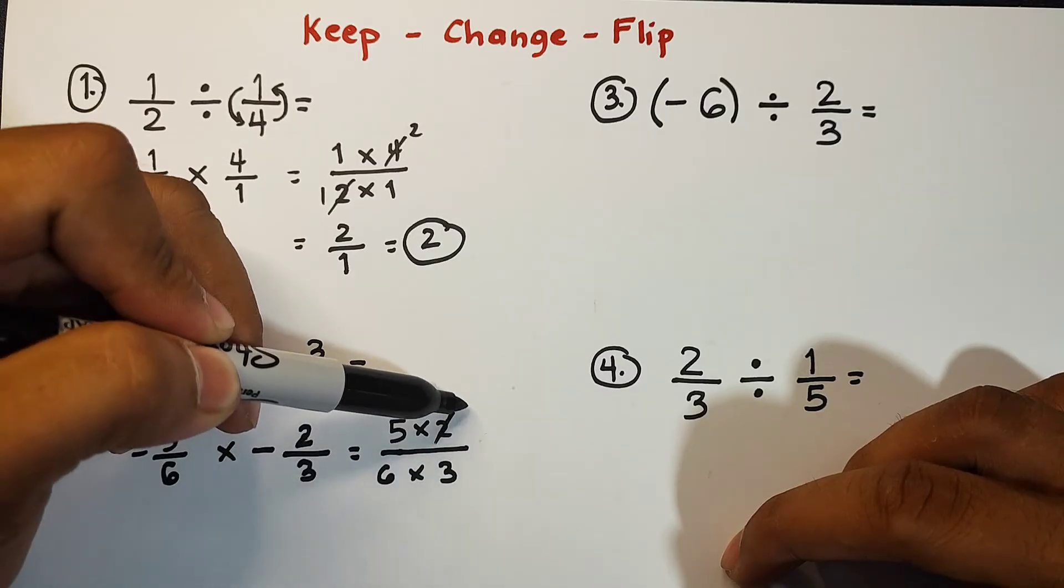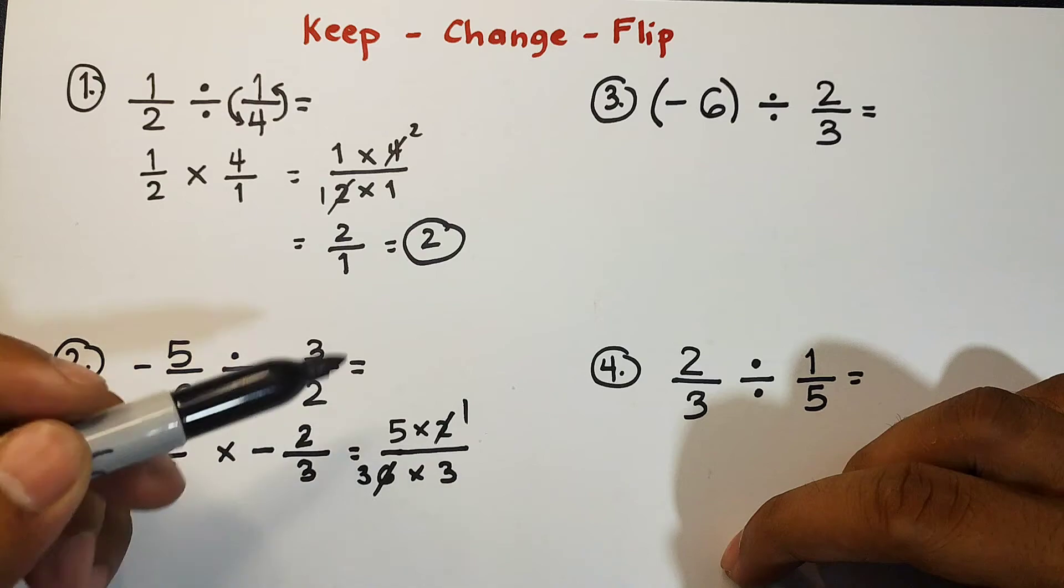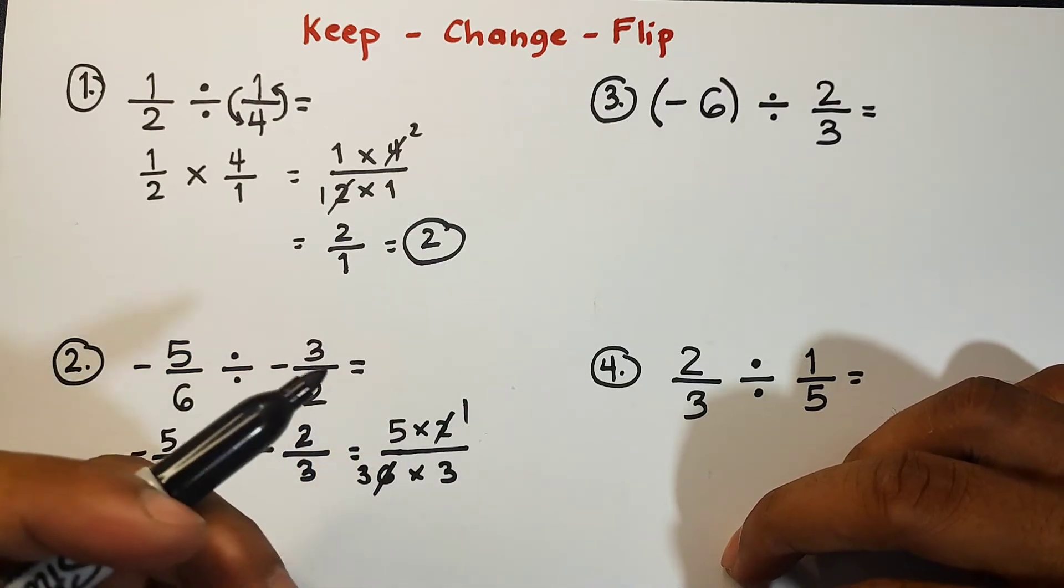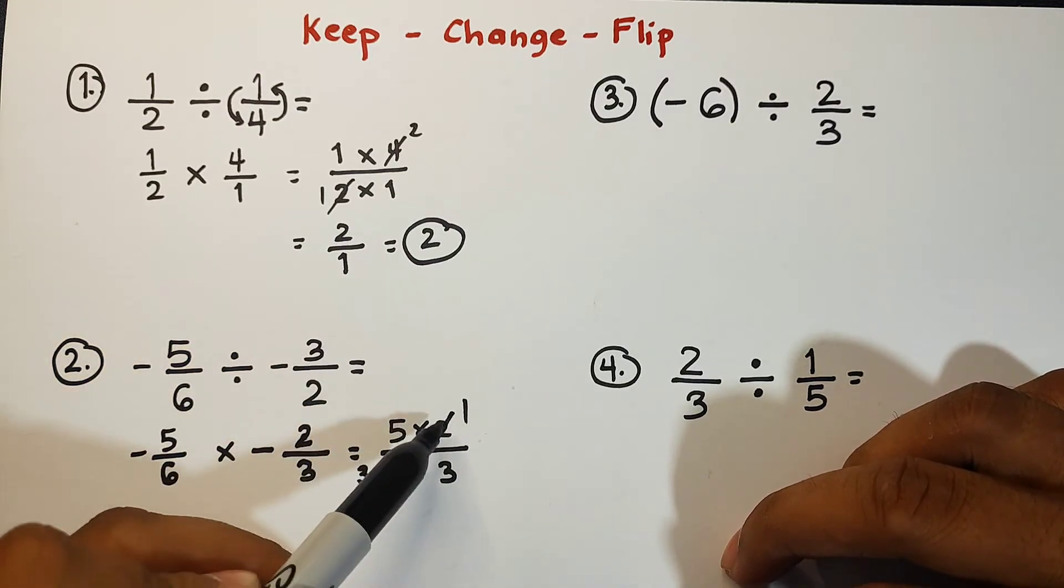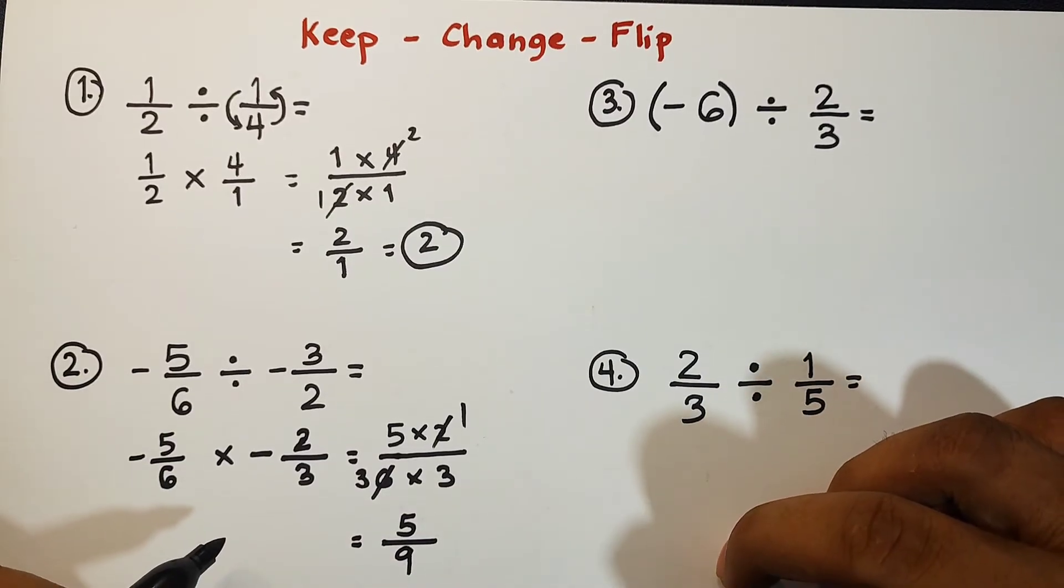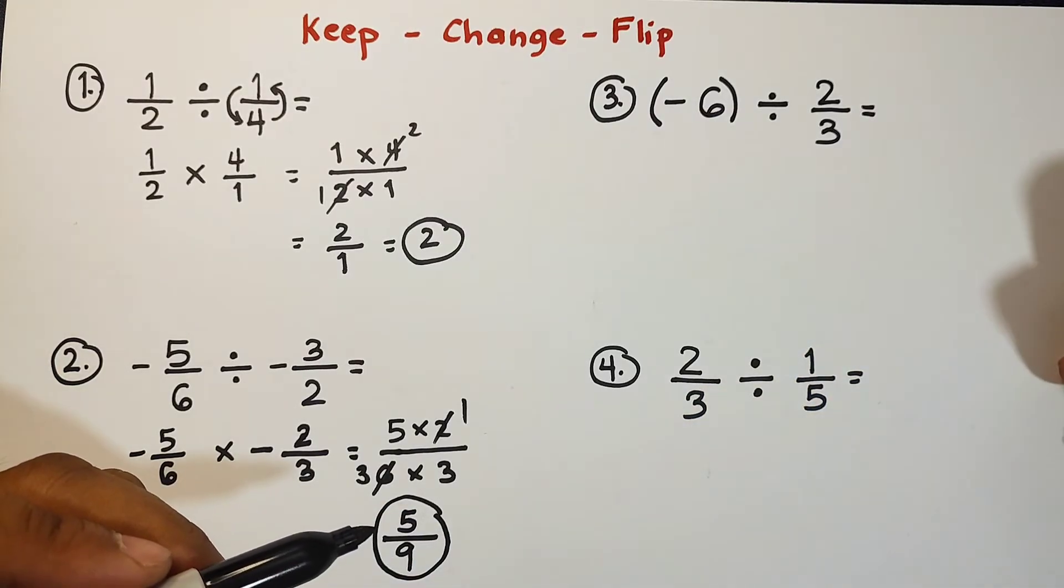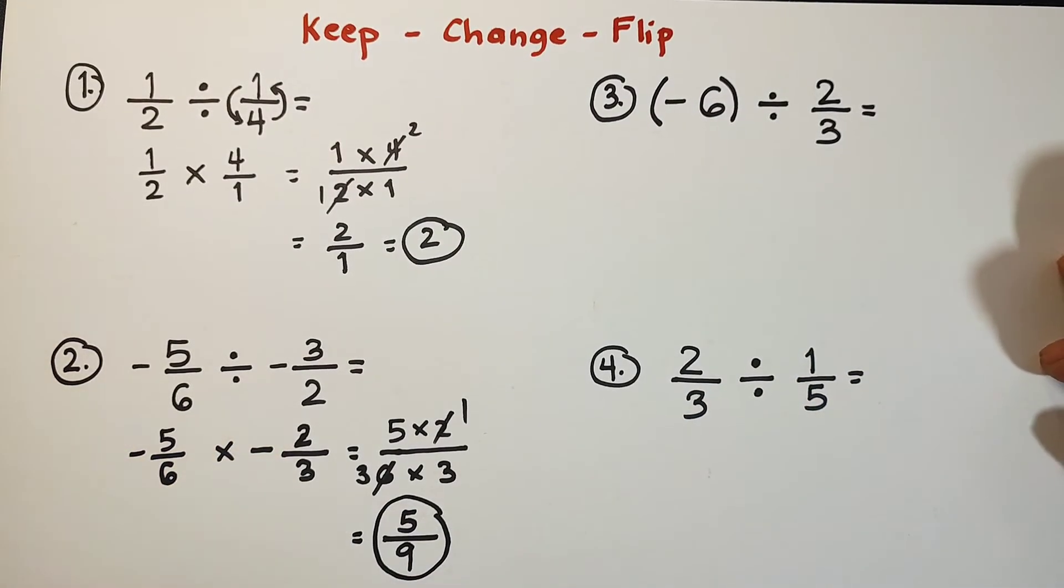Cancel out two, it will become one. Cancel out six, it will become three. And multiplying the remaining numbers in your numerator, five times one is equal to five over three times three, that is equal to nine. Meaning, the answer in number two is simply five over nine. Okay, guys?